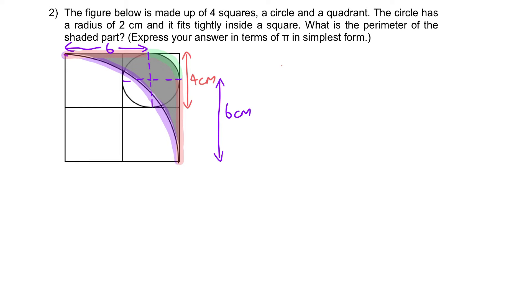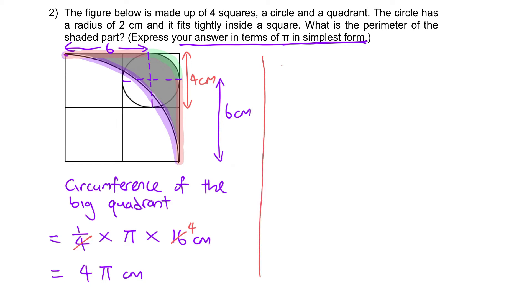Let's find the answer right now. First, let's find the circumference of the big quadrant, which is a quarter of the full circle circumference. So it's a quarter times π times the diameter. What is the diameter of the big quadrant? We have 4 plus 4, which is 8. So the radius of the quadrant is 8, therefore the diameter has to be 16. We will get 4π cm.